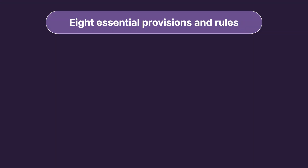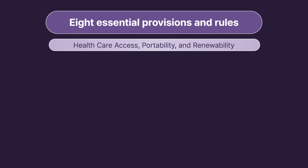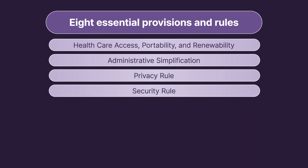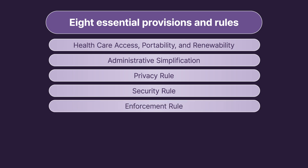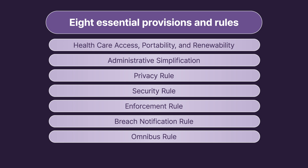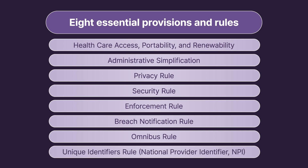There are eight essential provisions and rules under HIPAA: health care access, portability, and renewability; administrative simplification, which includes provisions for preventing health care fraud and abuse and medical liability reform; privacy rule; security rule; enforcement rule; breach notification rule; omnibus rule; and the unique identifiers rule, or National Provider Identifier (NPI). We will discuss each one of these rules individually.